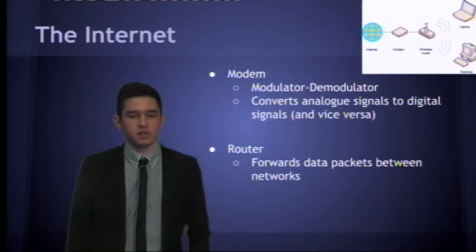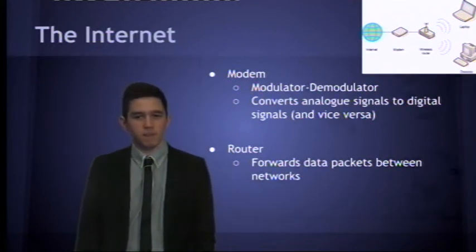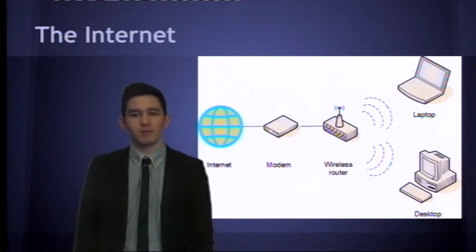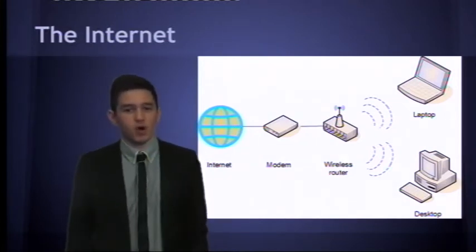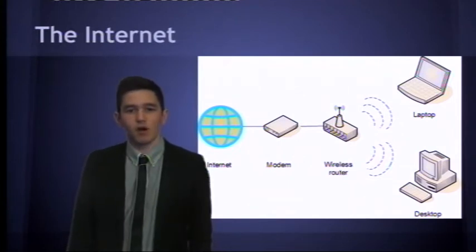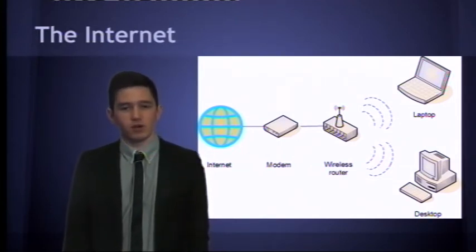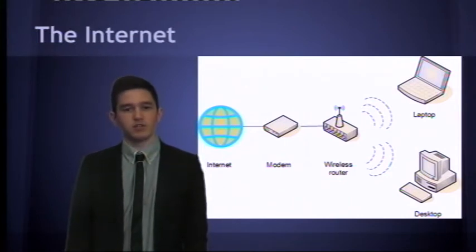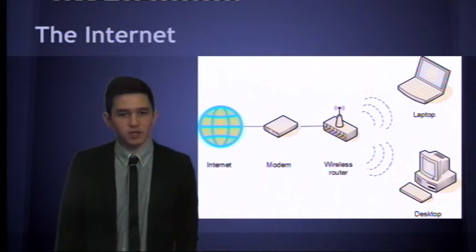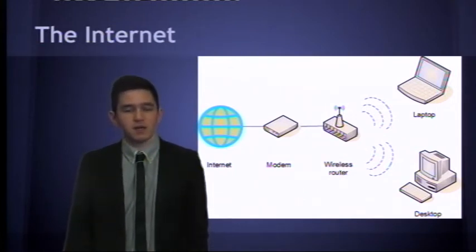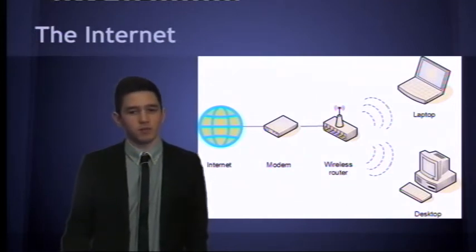A router is used to forward packets between networks. If I go back to this slide here, you can see that the laptop is connected to the wireless router. The wireless router connects to the modem and that to the internet. Routers can be wired or wireless. A router will send packets towards the destination. If the laptop requests a website, that request will be packaged into several packets, and those packets will go to the router, which passes them on to the modem and then to the internet.